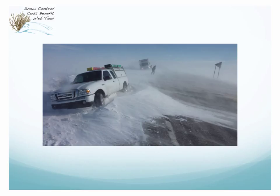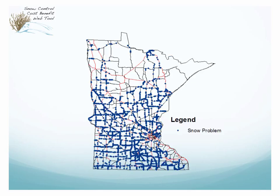Anyone that lives in non-forested regions in the north has seen this before and knows about this problem of blowing snow that creates poor driving conditions and drifts on the road, which inhibits mobility and causes safety concerns. This is a map of Minnesota here. Back about 15 years ago, the Department of Transportation did an inventory and found 3,700 sites throughout Minnesota on state highways that had blowing and drifting snow problems. So it's a big problem, especially in agricultural areas.